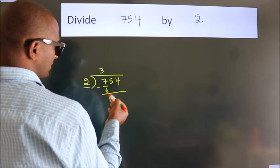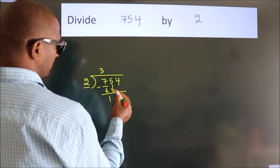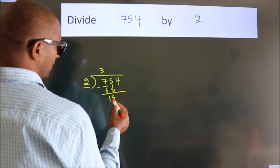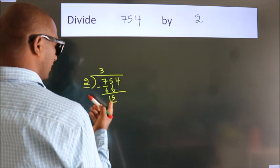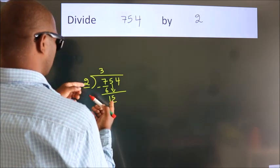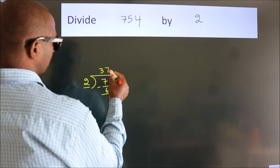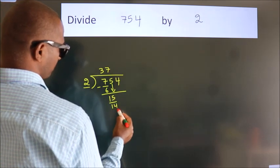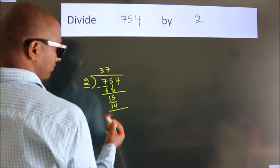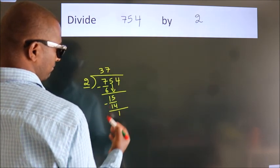After this, bring down the beside number. So 5 down, making 15. A number close to 15 in the 2 table is 2 times 7, which is 14. Now we subtract. We get 1.